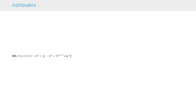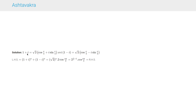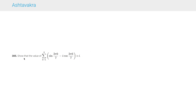Question 304 says: prove that (1+i)^n + (1-i)^n = 2^(n/2 + 1) cos(nπ/4). We write 1+i in polar form as √2(cos π/4 + i sin π/4) and 1-i as √2(cos π/4 - i sin π/4). Raising to the power n, the imaginary parts cancel, giving (√2)^n · 2 cos(nπ/4) = 2^(n/2 + 1) cos(nπ/4), which is the required result.